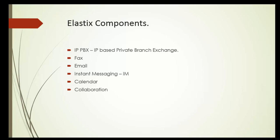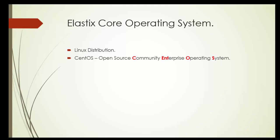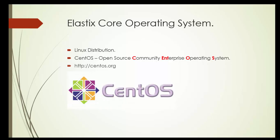These are the software packages that require a base operating system to run on. The Elastix core operating system is a Linux distribution — specifically CentOS, the open source community enterprise operating system. You can find more information about CentOS at centos.org.